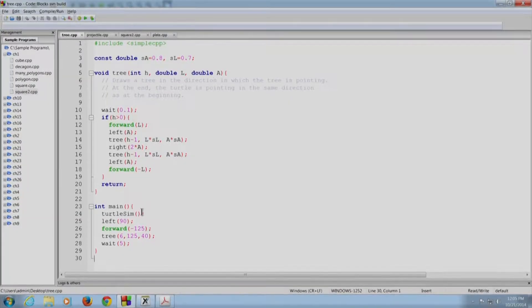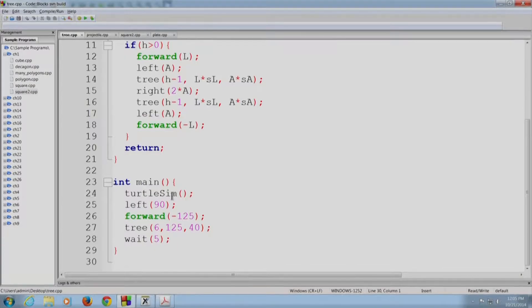So here is the entire program. Let me first zoom in on to the main program. The main program is reasonably simple. We first call turtle sim, then after turtle sim is called the turtle faces the right side and we want the tree to grow upwards and therefore we will first make the turtle turn left, okay. So now the turtle is facing upwards and we do not want the tree to start from the center of the canvas, but we want it to start a little bit below. So we will take the turtle downwards and for this we will use the forward command, but we have given the argument minus 125. So the turtle will go down by 125 pixels, but it will still keep facing upwards and now we will make the recursive call to draw a tree.